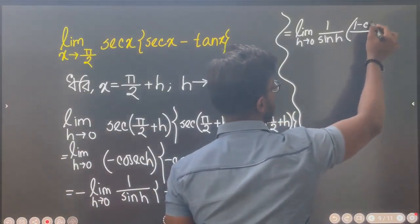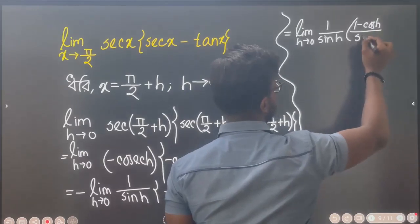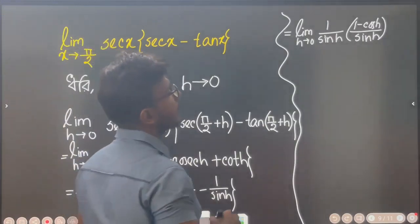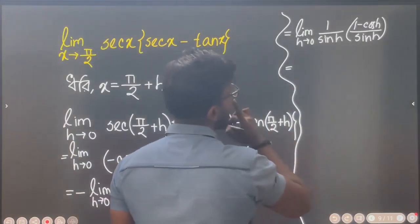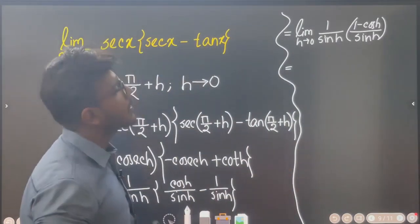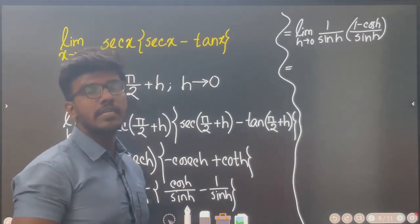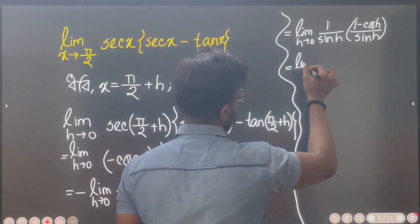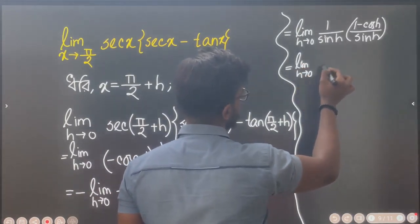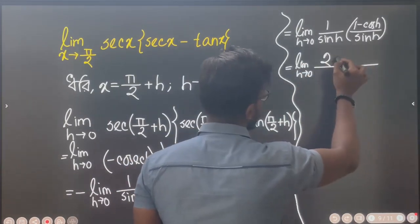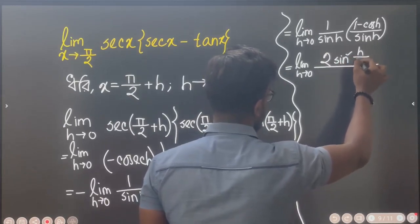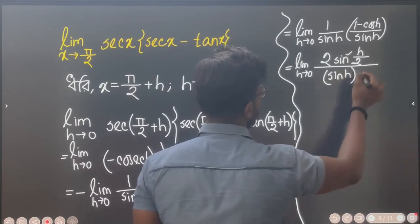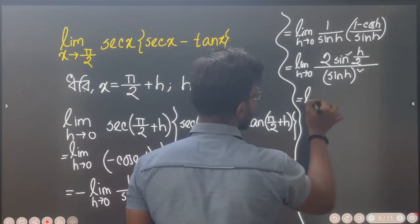We can do 1 minus cos h. So let's write: 1 minus cos h divided by sin h. Now, 1 minus cos h is equal to 2 sin squared (h by 2). So we can apply the sin 2 theta formula.